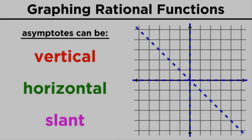Asymptotes can be vertical, horizontal, or at an angle, and finding these will be the key to graphing rational functions, so let's learn how to find them.